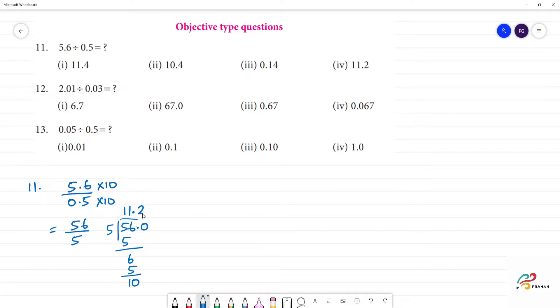5 into 10 goes twice, so 2. The answer is 11.2. This is 11.2. Clear? When we have 56, we write 56.0 for division.